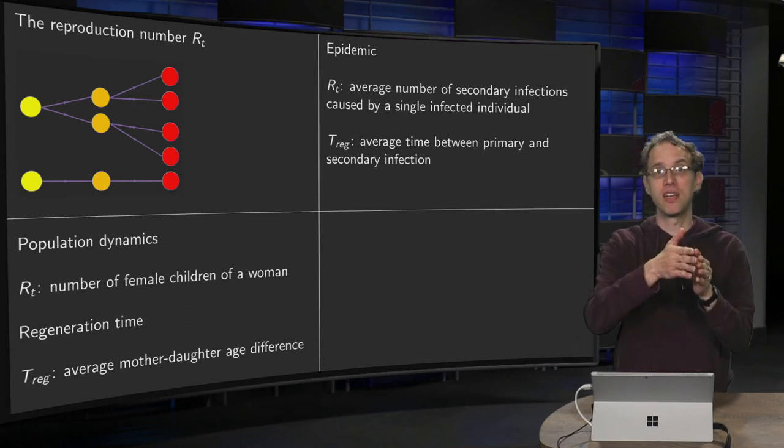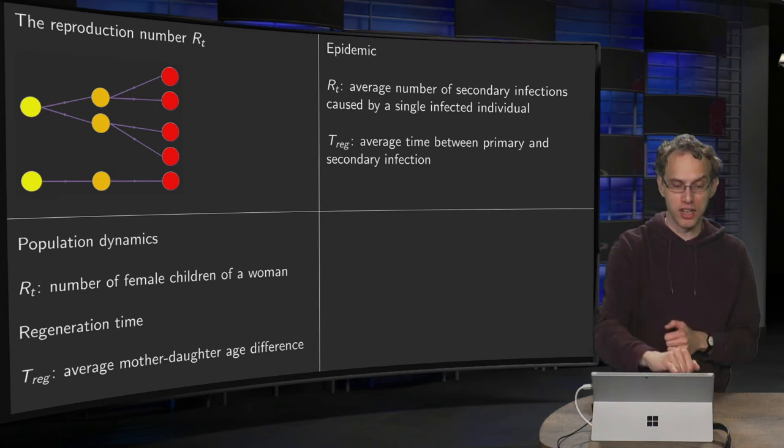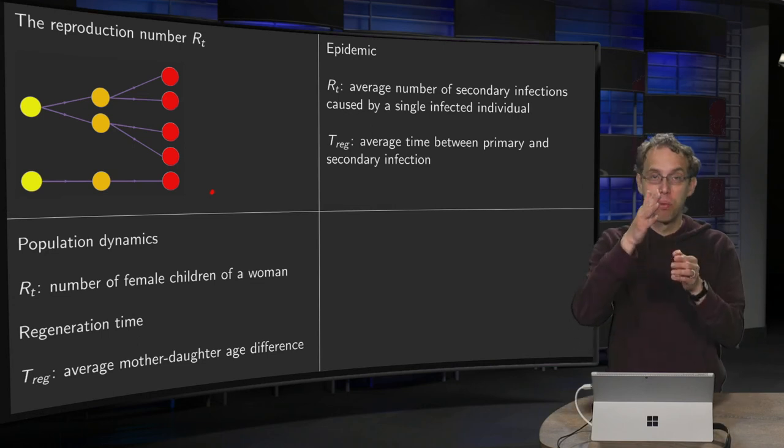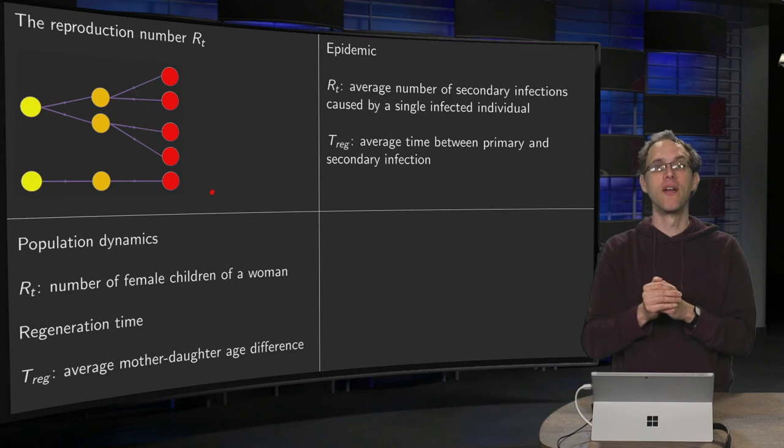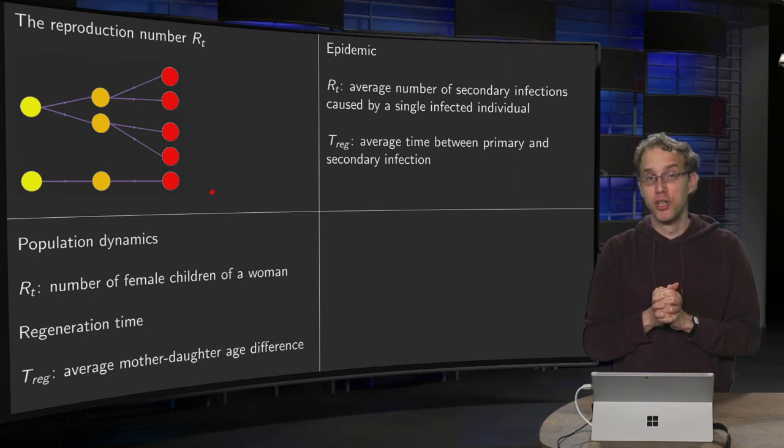So you move from one infected to two to four, and the epidemic grows. And in the second picture over here, you have a reproduction number of one. So one individual infects one other, and infects one other, and the number of infectees stays more or less stable. So that's what's called the reproduction number.